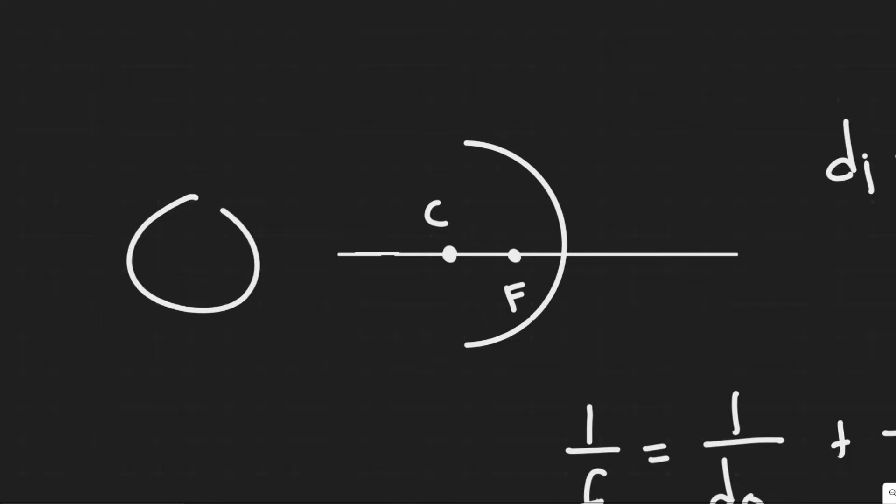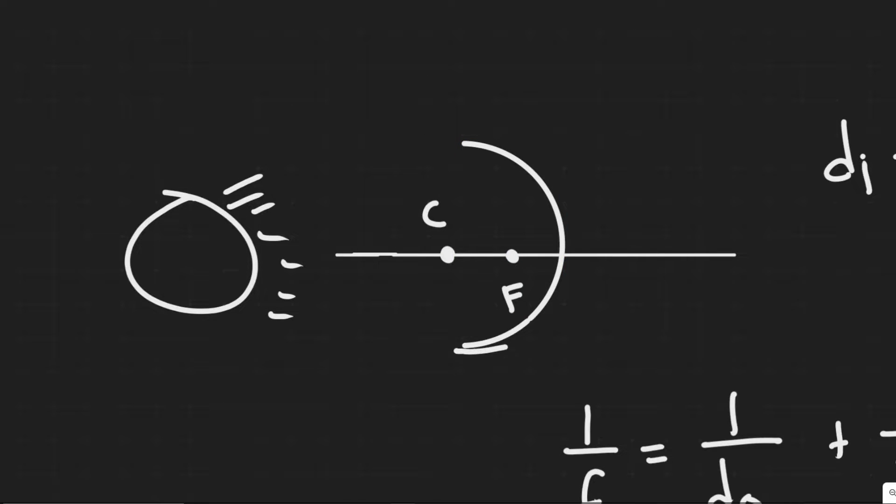So if we imagine our sun is over here, concave means it's pointing at it like this, in this circular shape where it's like eating the sun. You can imagine if it was convex it would be like this, but they tell us it's concave at the sun.